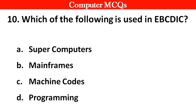Next question. Which of the following is used in EBCDIC? Options A: Supercomputers, B: Mainframe computers, C: Machine code, D: Programming. Right answer is option B: Mainframe computers.